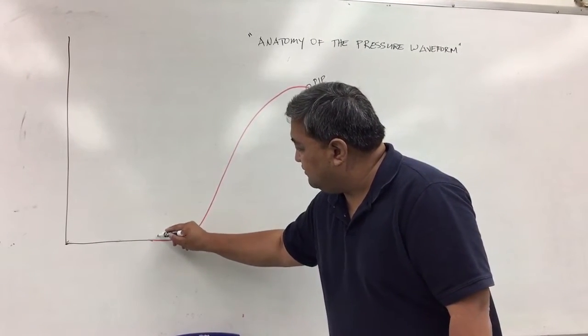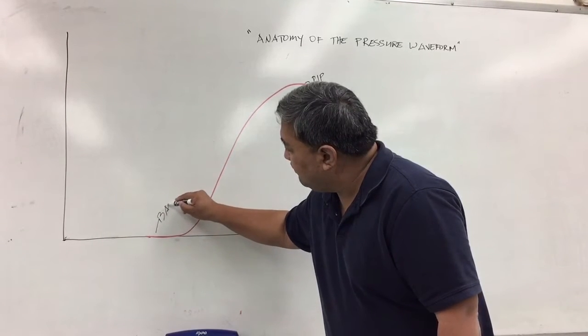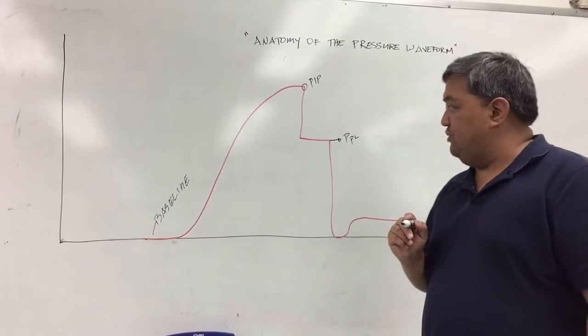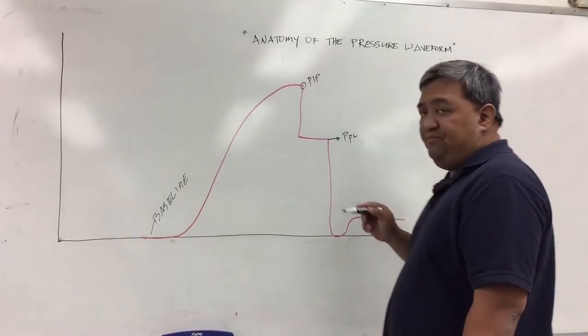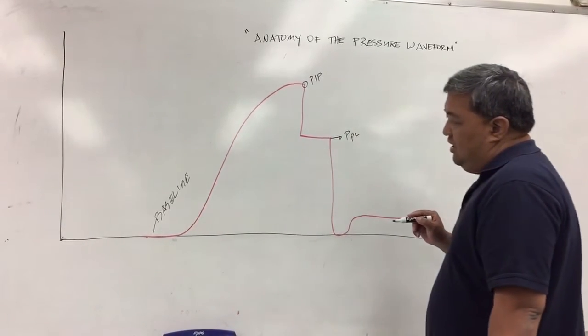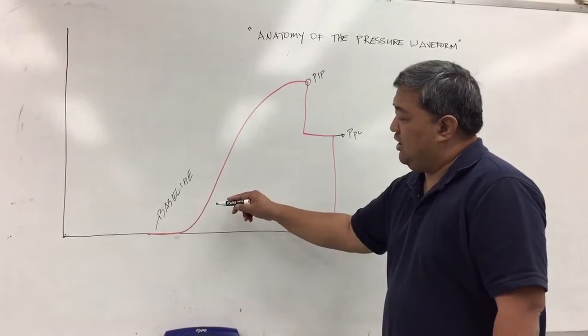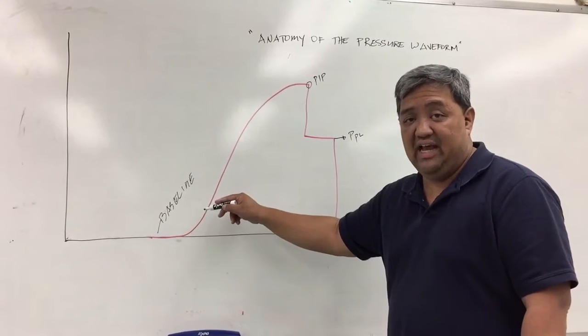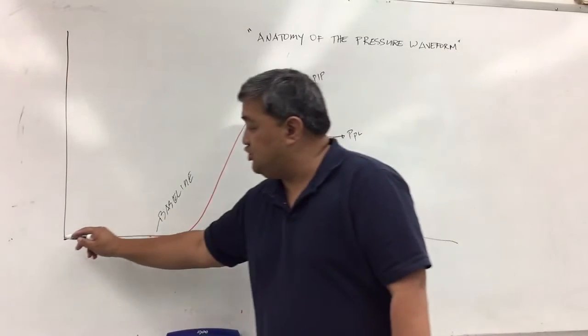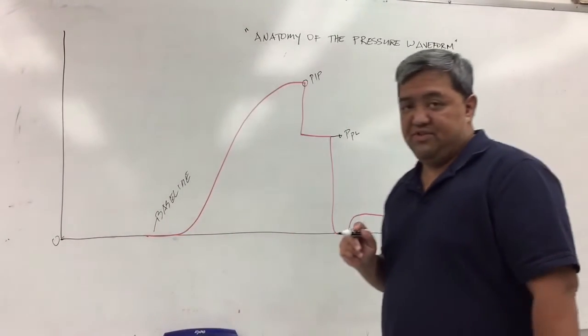Here is your baseline. Again, that's usually a starting point. If there is PEEP involved, then most likely the starting point of your pressure waveform is slightly elevated to whatever PEEP that is set. But in this case, let us assume that the PEEP is zero.